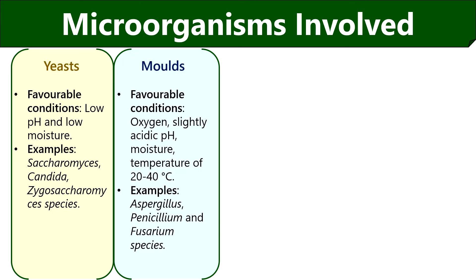Molds are another type of fungi that are multicellular. They produce a visible mass on the food surface called mycelium. They require oxygen, slightly acidic pH, moisture and a temperature between 20 to 40 degrees Celsius to cause food spoilage.